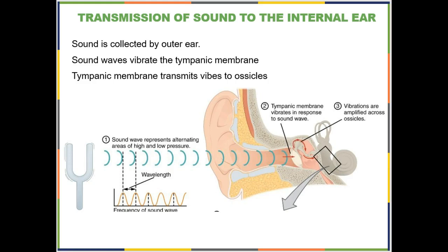Sound waves are collected by your outer ear and the first structure they hit is the tympanic membrane. We're going to trace the pathway of vibrations throughout, because hearing is very mechanical — many steps along the way, one thing causes something else to vibrate. A lot of what we'll talk about is the anatomy of the parts that get vibrated; the physiology doesn't appear until the very last step.